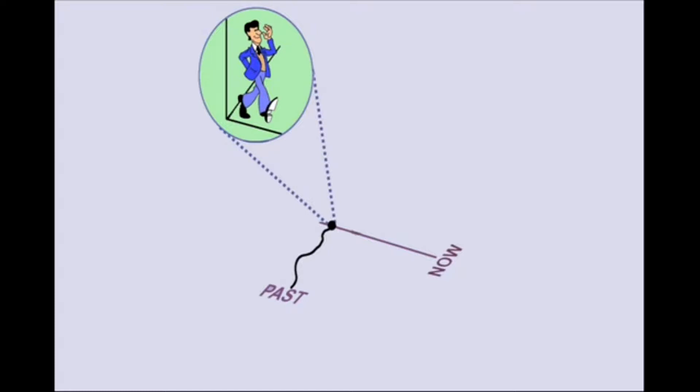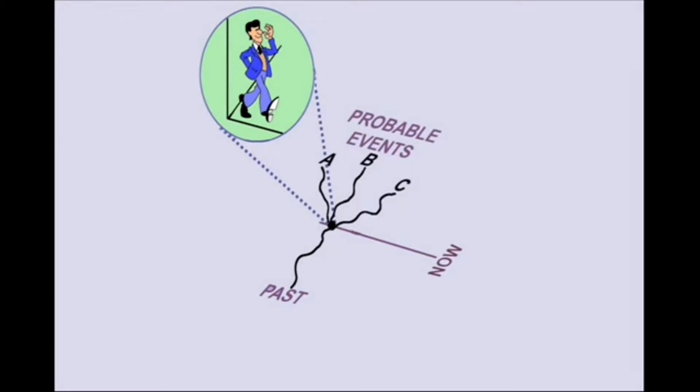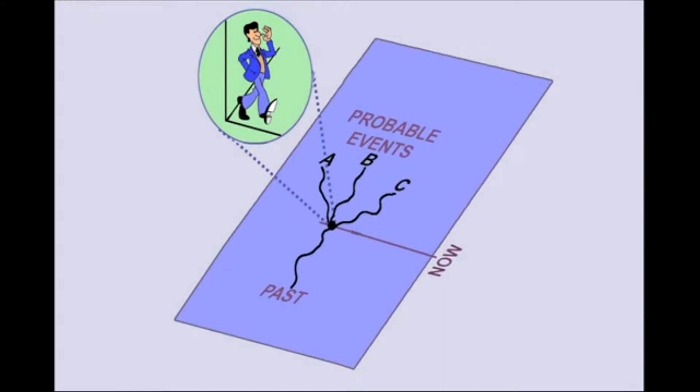At any moment we can choose between different actions. For example, we could choose to go out for coffee, go for a walk, or stay at home. At the moment of the present now, these courses of action exist as probable events, A, B or C, until a choice is made and then only one is experienced.